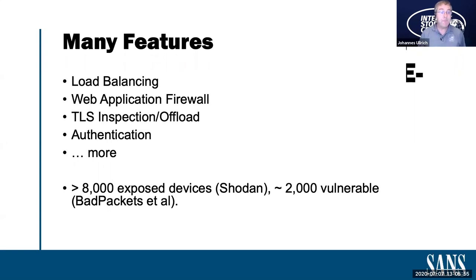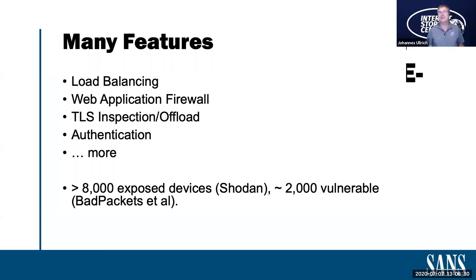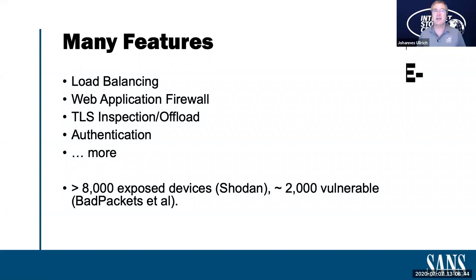These are big, expensive devices — not something every business has hidden away in their closet. According to Shodan, there are about 8,000 exposed devices, and there are probably more out there. Over the last week, there were internet-wide scans looking at how many of these devices are actually vulnerable — around 2,000 of those 8,000 devices. There may be more devices that are better protected, still vulnerable but not reachable, and as such less likely to get attacked.